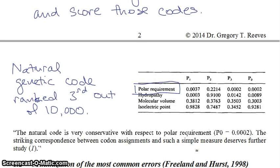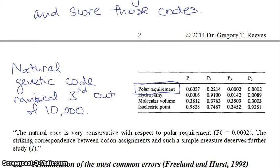To quote the paper: 'The natural code is very conservative with respect to the polar requirement.' The score for their P0 was 0.0002, meaning only two out of 10,000 scored better. They wrote: 'The striking correspondence between codon assignments and such a simple measure deserves further study.' And of course it did, which is why in 1998, seven years later, they did another study. In that newer 1998 study, they wanted to first verify that the original 1991 result held up — back in 1991 the computing power wasn't that good, so they had only looked at 10,000 different random genetic codes. Seven years later, with much better computing power, they decided to look at a million different randomized genetic codes to see if they could reproduce their original work.